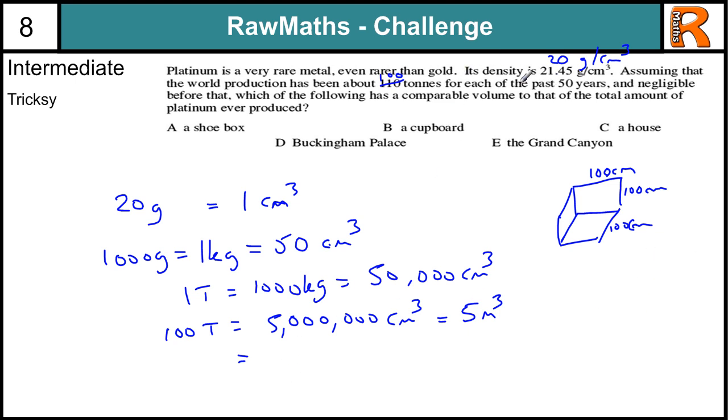Now that's each year for the past 50 years, so 50 years is going to be 50 times 5, which is going to be 250 meters cubed. Again, that sounds quite a lot, but if we break it down into a box,